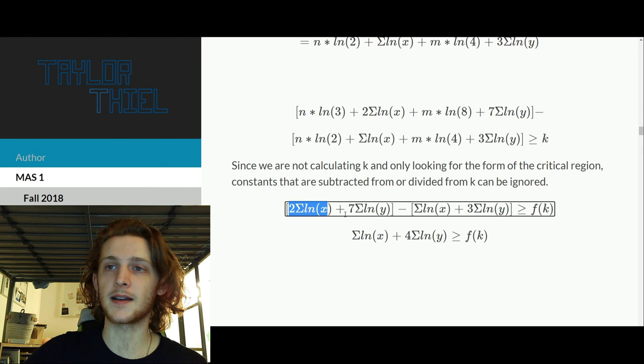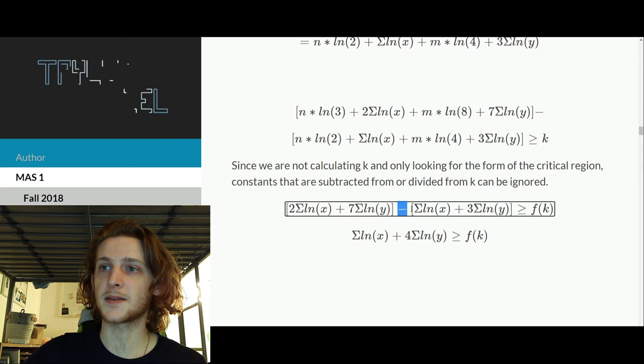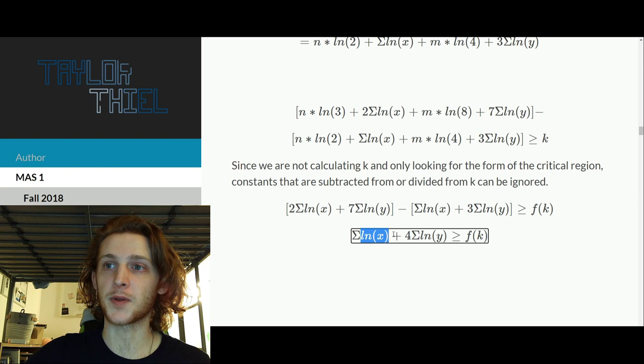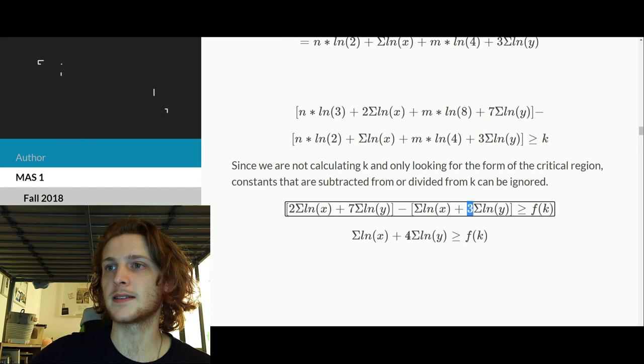That leaves us with this more simplified inequality. And then the final step is just to simplify further by saying, combining like terms. So we have 2 times the summation of the natural log of x, and then subtract 1 summation of the natural log of x. So we are only left with one of those. And then finally, 7 subtract 3 is going to leave you with 4, and the direction of the inequality hasn't changed.